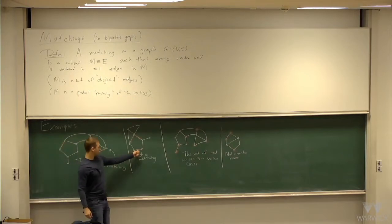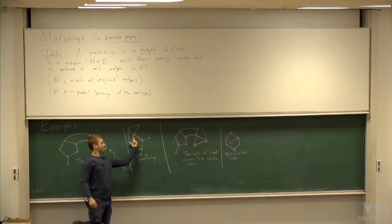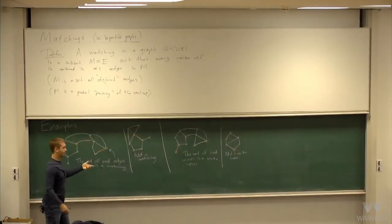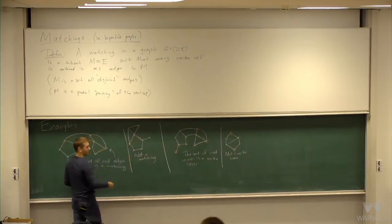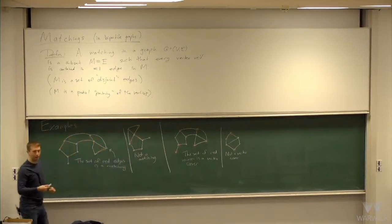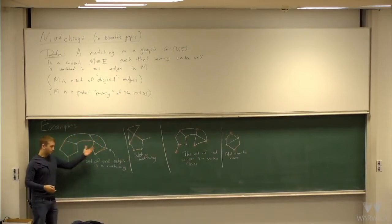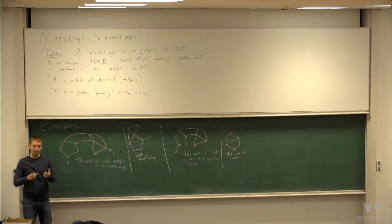But this set of red edges — this edge and these two — that's not a matching, because this vertex happens to be in two red edges. So matching is basically a way of pairing up vertices.